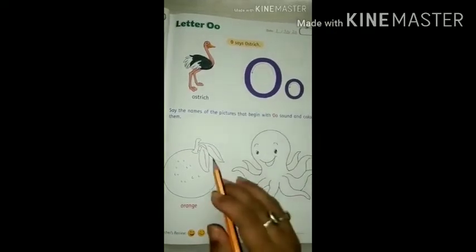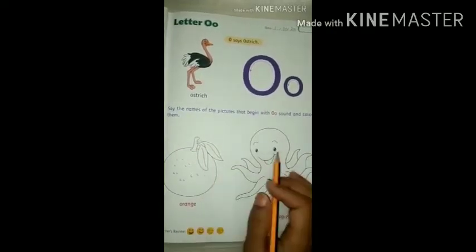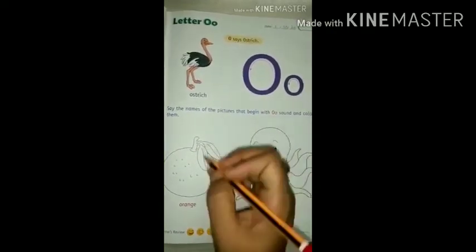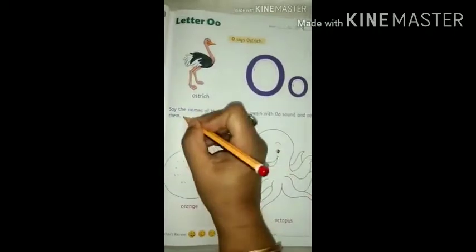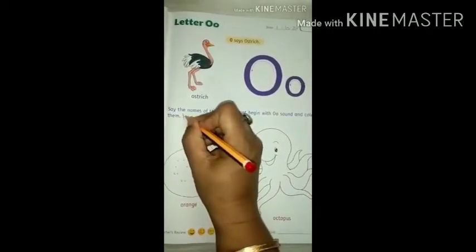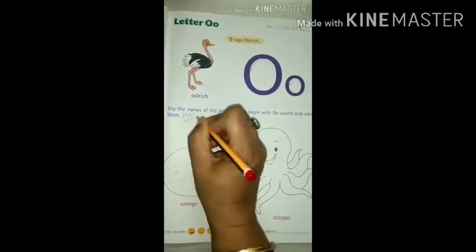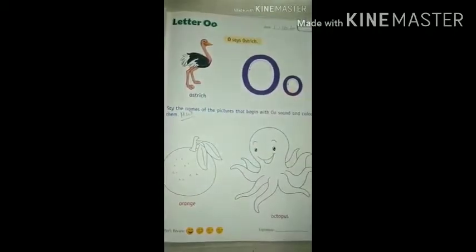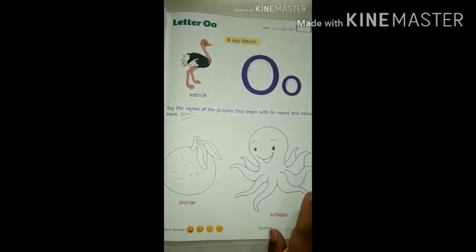So now you know you have to colour these two pictures — orange and octopus. And this one is your homework. So colour neatly and nicely.